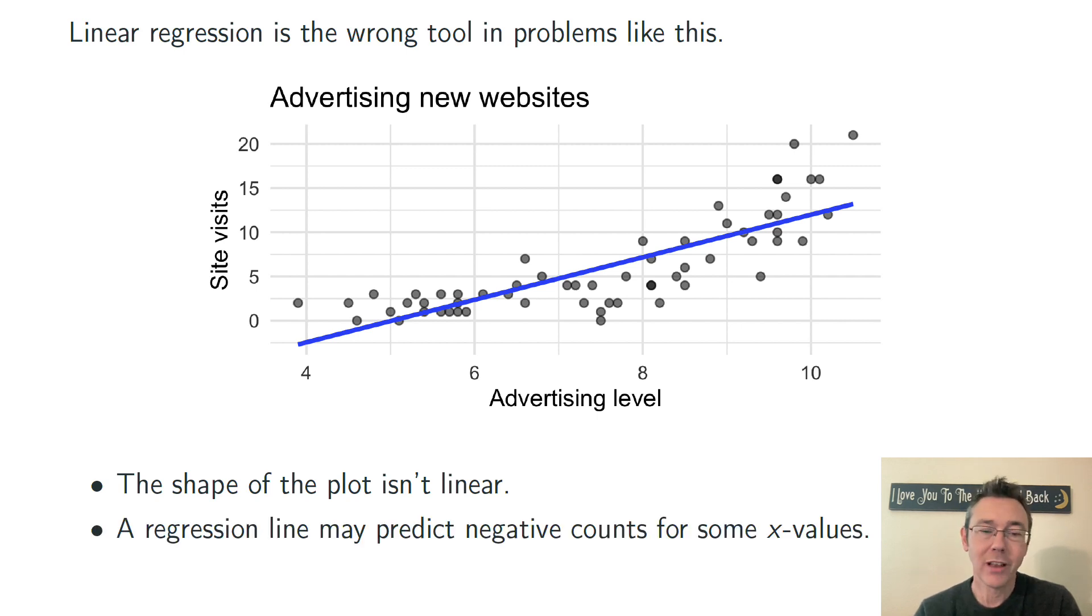Secondly, a regression line may predict negative counts for some x values. And we can see that here, where for smaller advertising levels this regression line is predicting negative counts. When we're doing linear regression the response variable in theory can be anything, but in this situation counts can only be positive. So that's a problem here.